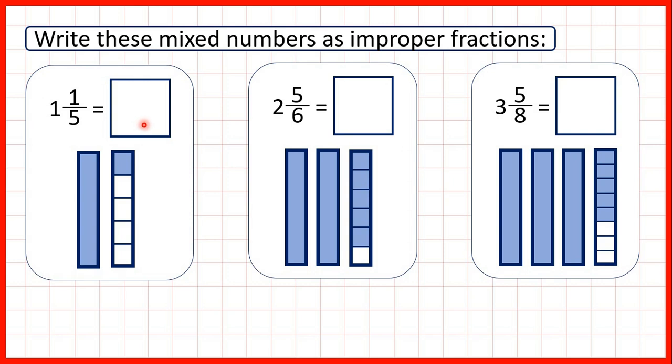With improper fractions the numerator is larger than the denominator. So how can we change mixed numbers to improper fractions? Well the denominator stays the same, so in our improper fraction the denominator will still be 5. But then to get the numerator we need to multiply the whole number by the denominator and then add the numerator. So 1 times 5 is 5, plus 1 is 6. So that's our numerator.